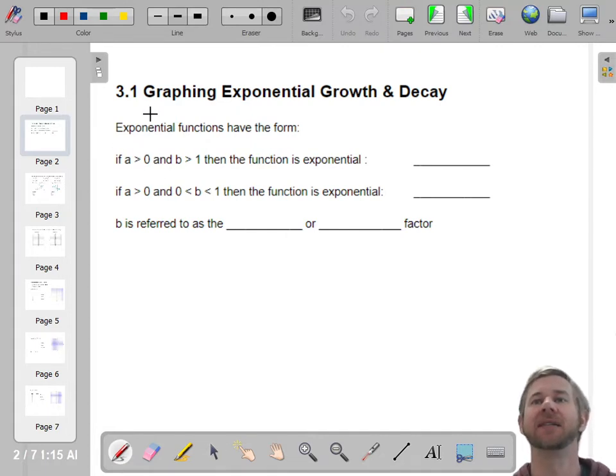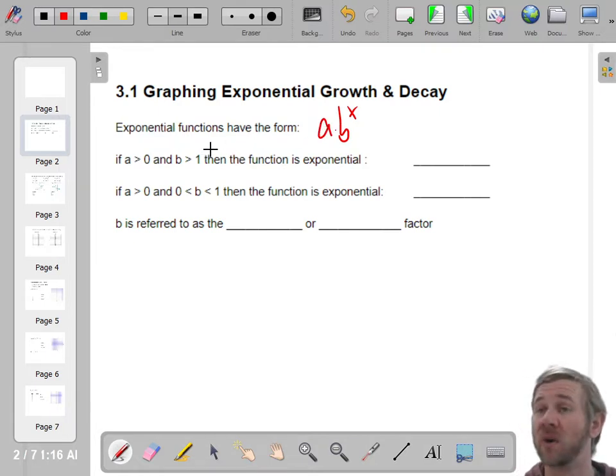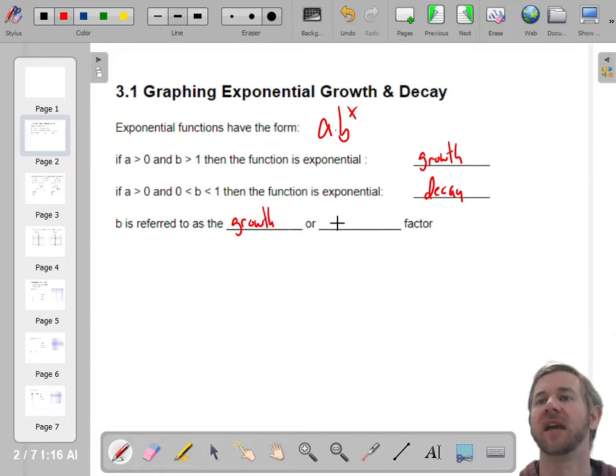So first thing, if A is greater than 0 and B is greater than 1, remember it's A times B to the X. So A is greater than 0, that just means you're starting with some amount of stuff that's not negative. And B is greater than 1. If it's greater than 1, then that means this is exponential growth. If your B value is greater than 1, it's exponential growth. If it's between 0 and 1, then we call that exponential decay.